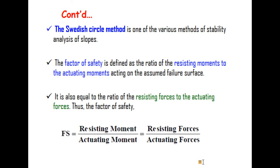The factor of safety is defined as the ratio of resisting moment to the actuating moment acting on the assumed failure surface. It is also equal to the ratio of resisting forces to the actuating forces. Thus, the factor of safety equals resisting moment divided by actuating moment, or resisting force divided by actuating force.